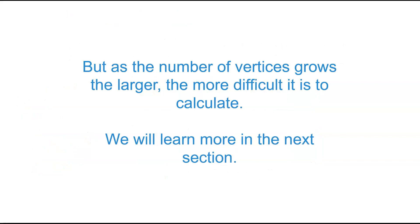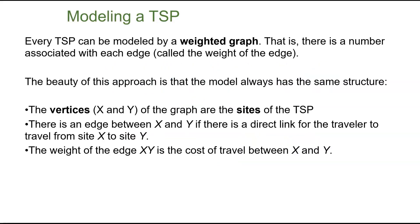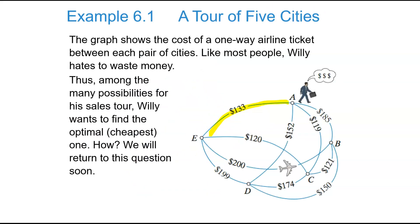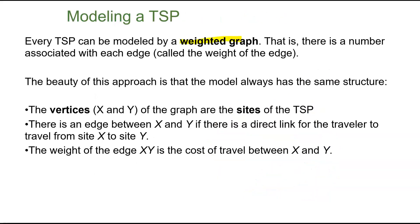But as the number of vertices grows, the more difficult it is to calculate. So if you see that you're going to have a lot of circuits, you may not want to do it by hand. And every traveling salesman problem can be modeled by a weighted graph. And that's where we put a number with the edge. So you can, again, look back. There's a weighted graph because it has the numbers along the edges. And there is a weighted graph because it has the number along every edge. So every traveling salesman problem can be modeled by those weighted graphs.